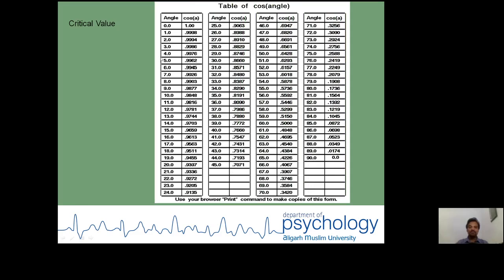The critical values are given, so if you go to this cosine 59 degrees, so this is the value of tetrachoric correlation.